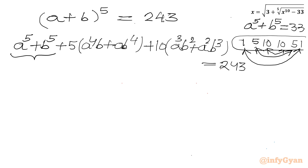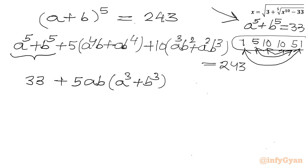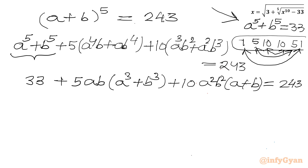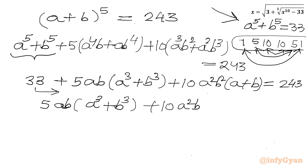Now substituting a to the power 5 plus b to the power 5 equals 33, and taking 33 to the right hand side gives 243 minus 33 equals 210. So we have 5ab times (a cubed plus b cubed) plus 10 a squared b squared times (a plus b) equals 210. Since a plus b equals 3, substituting gives 5ab(a cubed plus b cubed) plus 30 a squared b squared equals 210.